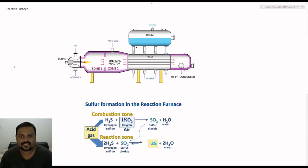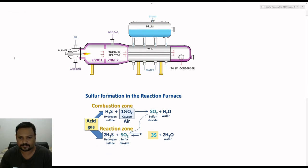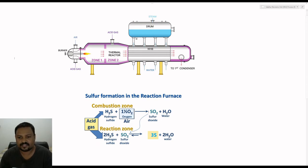The combustion mixture first enters the acid gas burner and then combustion takes place. There are two zones: zone 1 and zone 2. Inside zone 1 the combustion takes place — one third of the hydrogen sulfide will be oxidized to produce sulfur dioxide and water. In zone 2, which is also known as the reaction zone, the remaining two thirds of the hydrogen sulfide present in the feed will combine with sulfur dioxide to produce 3 moles of sulfur and 2 moles of water.